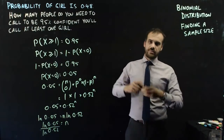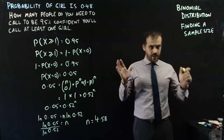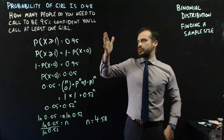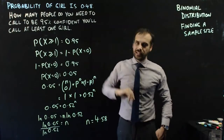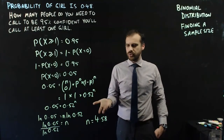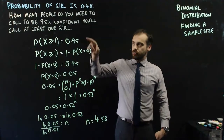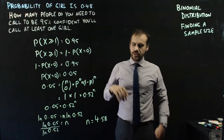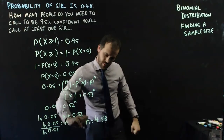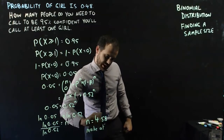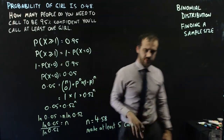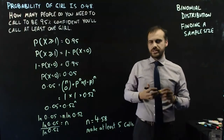Typing that into the calculator gives us 4.58. So think about what we're asking: how many people do you need to call to be 95% confident you'll call at least one girl? You can't make 4.58 calls. If you make 4 calls, you'll be less than 95% confident. So you need to make at least 5 calls to be more than 95% confident.